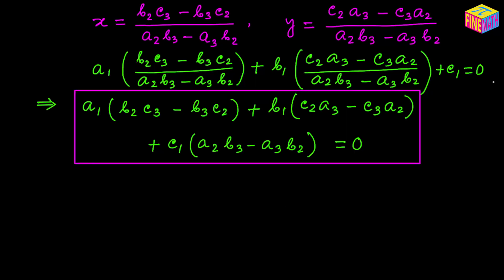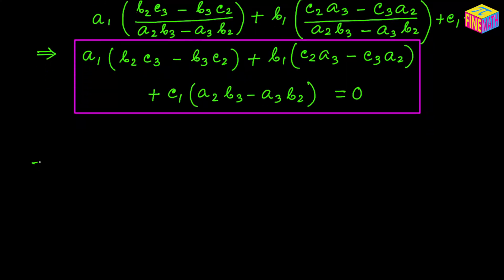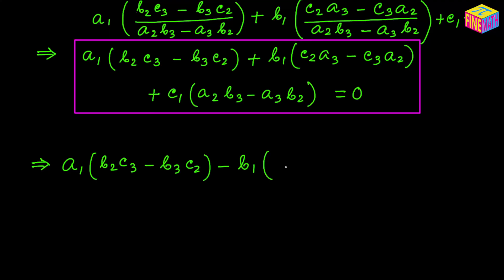Let me highlight this. If we rearrange this a little bit, keeping the first term as is — a₁ times (b₂c₃ minus b₃c₂) — then using a negative sign with b₁, I flip the signs of the two terms inside the parenthesis. So I write c₃a₂ as a positive quantity and then minus c₂a₃.